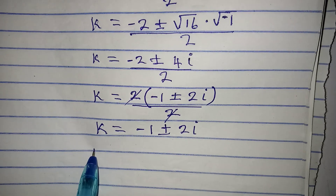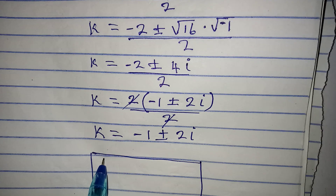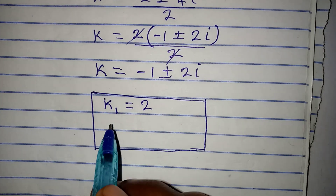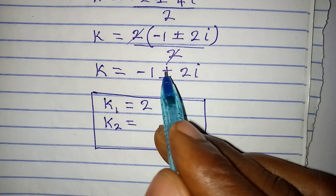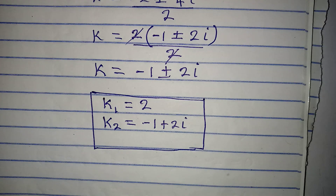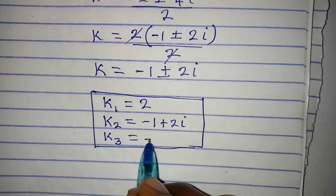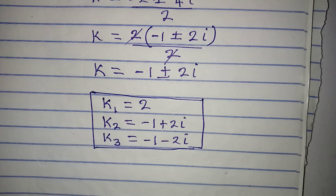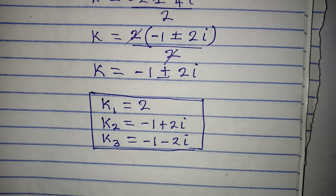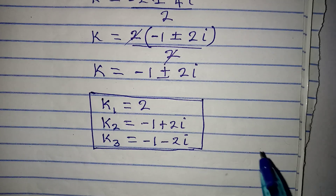Bringing the three solutions together: k₁ equals 2 (the first solution), k₂ equals minus 1 plus 2i (the second solution), and k₃ equals minus 1 minus 2i (the third solution). These are the three solutions obtainable from the given equation. If instructed to find only the real solution, then k equals 2. Thank you for watching.